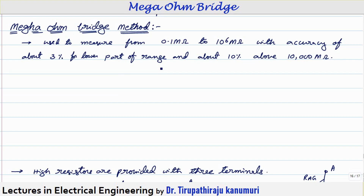Today we are going to discuss the Mega Ohm Bridge. This bridge is used to measure high resistance, starting from 0.1 mega ohm up to 10^6 mega ohms, with an accuracy of about 3 percent for the lower part of the range and about 10 percent for around 10,000 mega ohms.